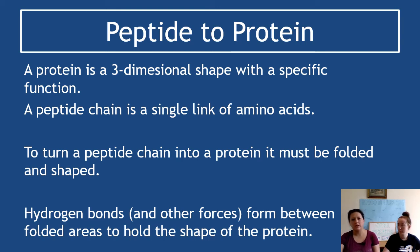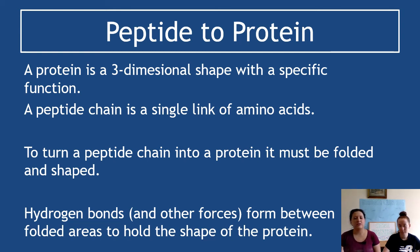At the end of translation we have a peptide chain — a single chain of amino acids. A protein, however, is a three-dimensional shape with a specific function, like enzymes with their active sites. To turn the peptide chain into a protein, it must be folded and shaped. Hydrogen bonds and other forces such as van der Waals forces interact between sections to cause folding and hold the protein's shape. Three key bonds to know: sugar-phosphate bonds from DNA structure, hydrogen bonds from DNA structure and here, and peptide bonds between amino acids.